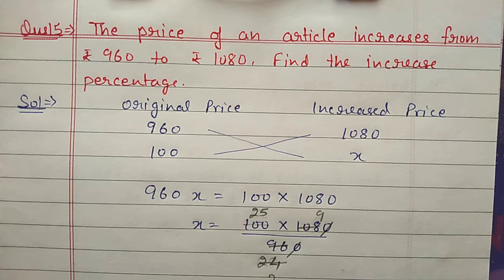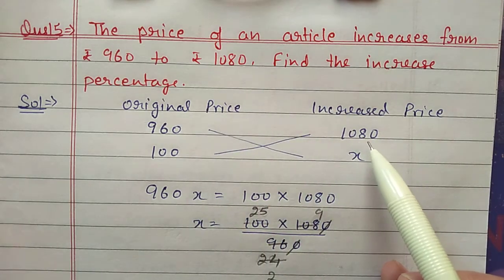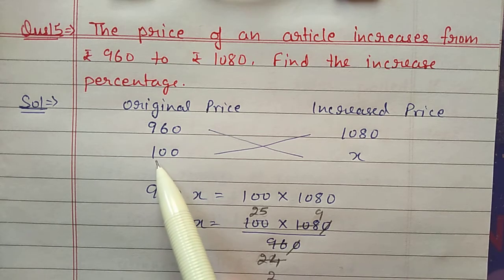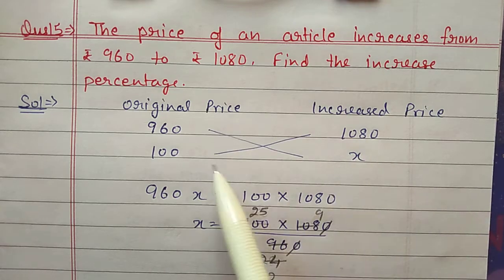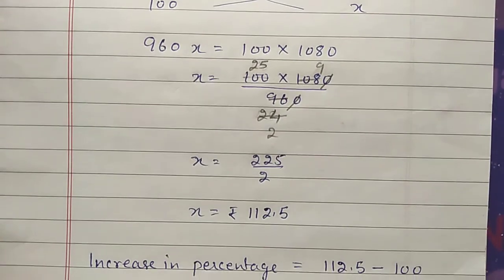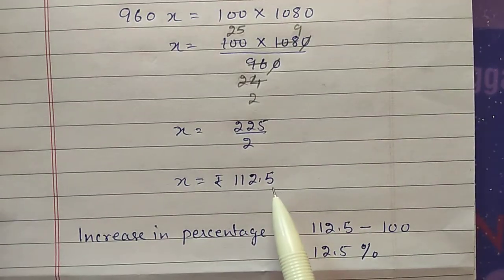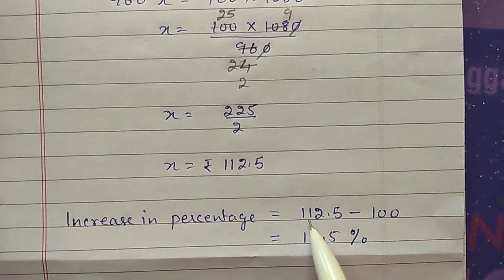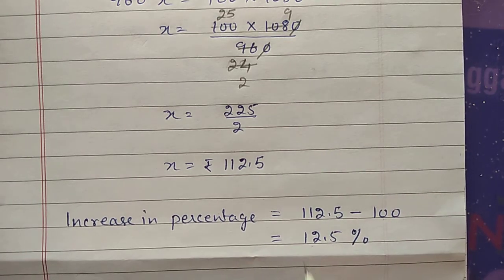Question number 15: the price of an article increases from 960 rupees to 1080 rupees — find the increase percentage. Using the shortcut method: original price was 960 rupees and after increasing it becomes 1080 rupees. Suppose original price is 100 and after increasing it becomes x. Cross multiply: 960 into x equals 1080 into 100. Shift 960 to the other side and cancel — x equals 112.5. Since original was taken as 100, the new value is 112.5, so the increase is 12.5 percent.